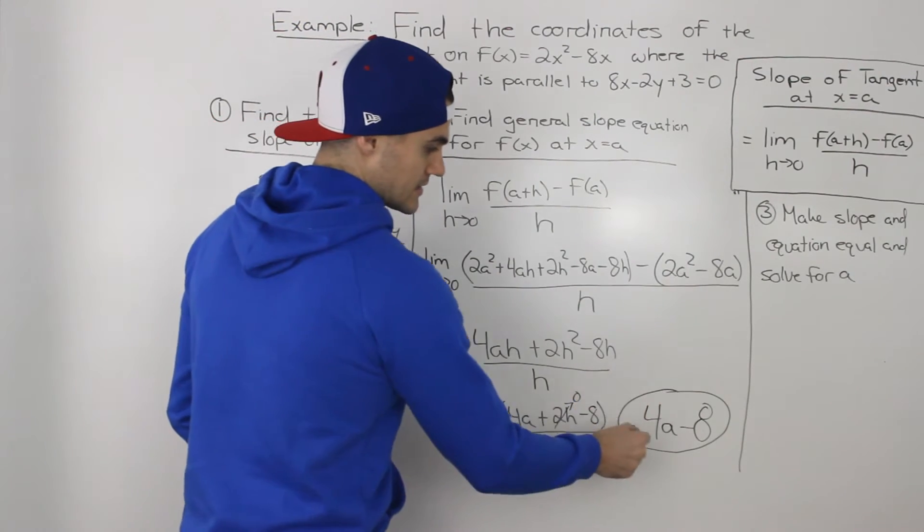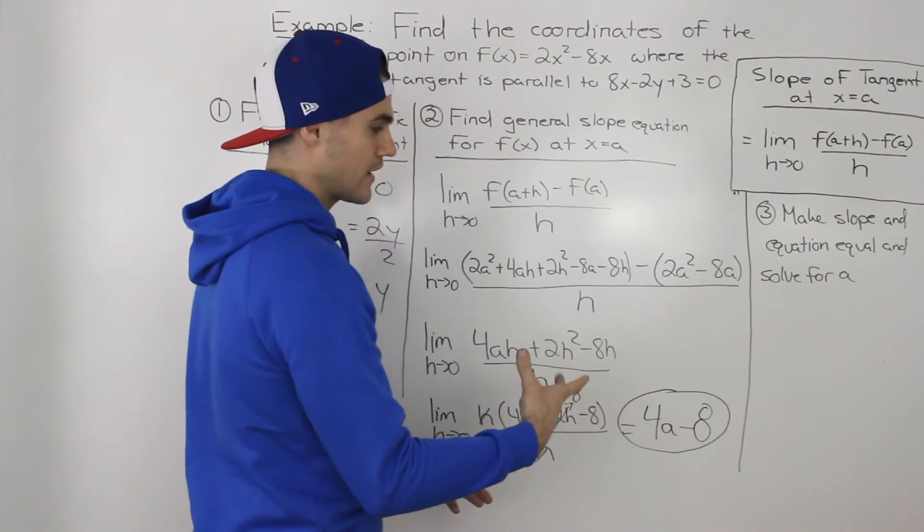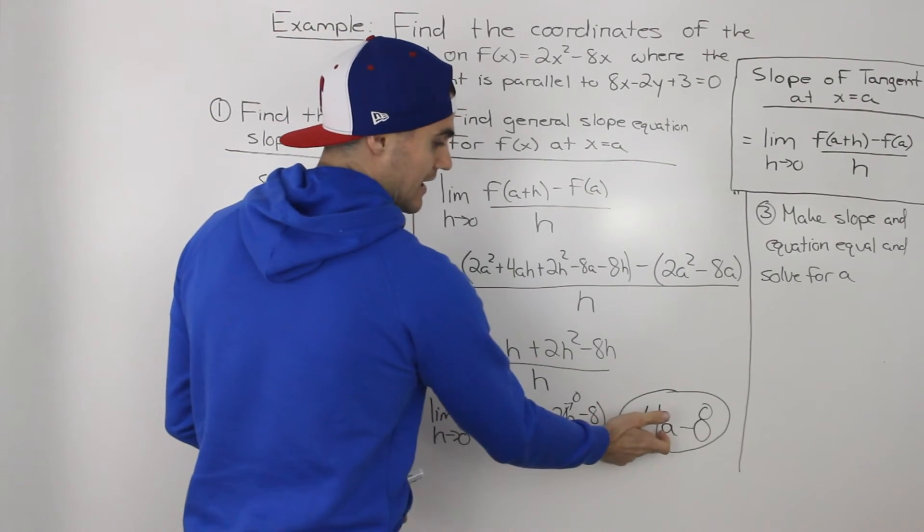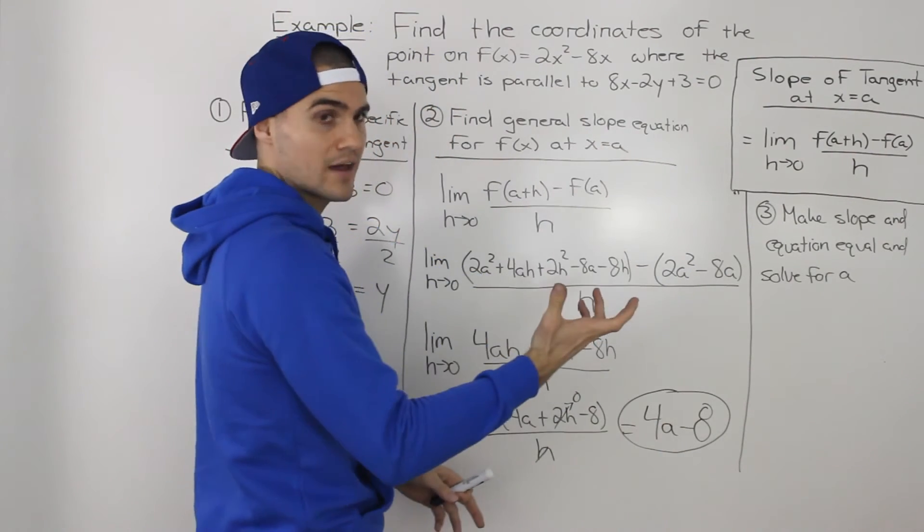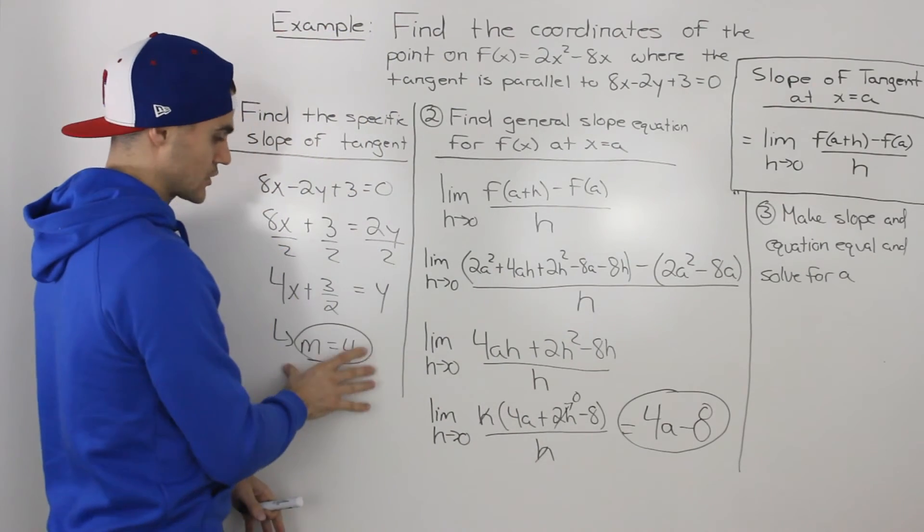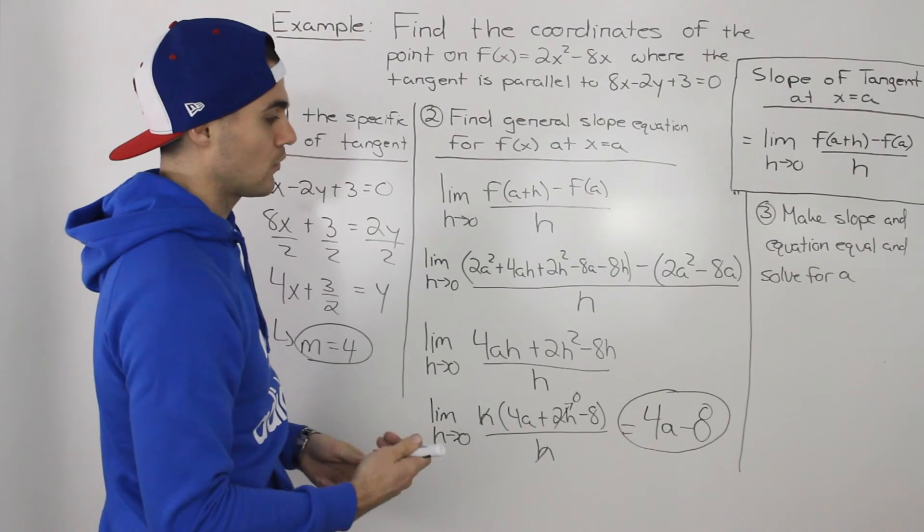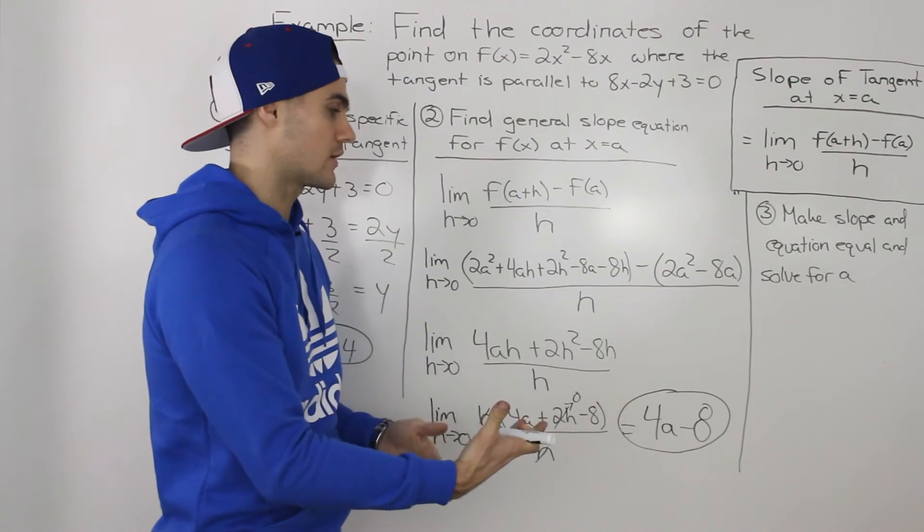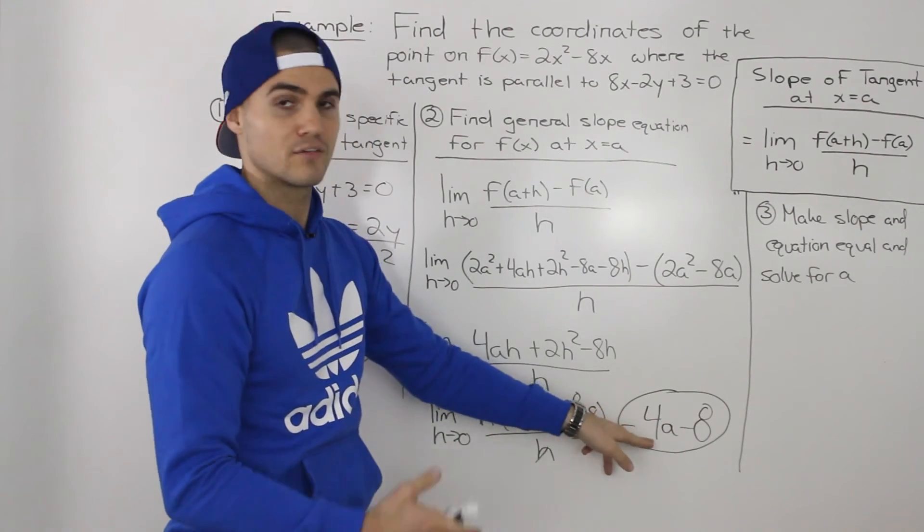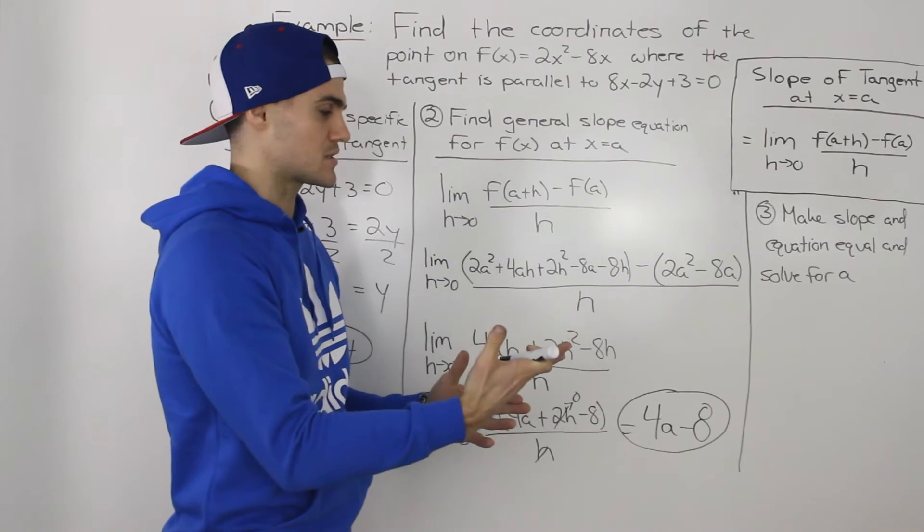Because this gives us the slope of a tangent at a specific a value, or at a specific x value. And this is the actual slope, and we're finding coordinates. Usually in questions before, we're given the coordinates and we have to sub them in and find the slope of the tangent at that specific coordinate.